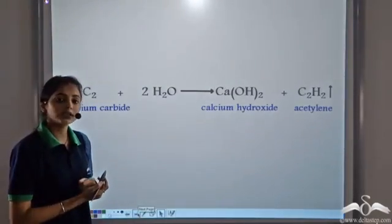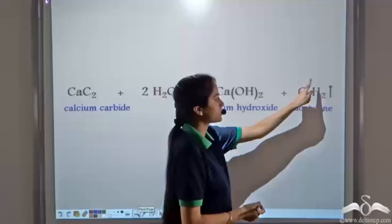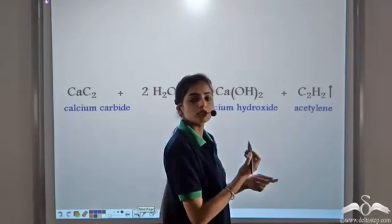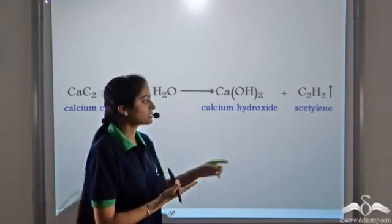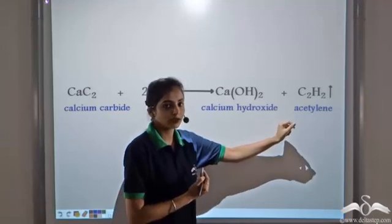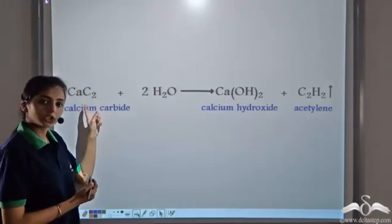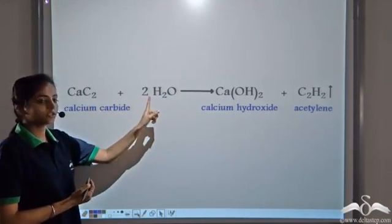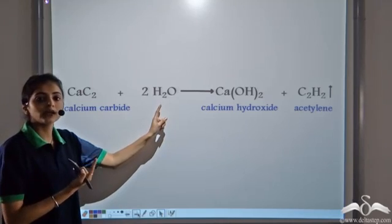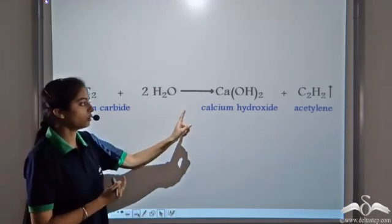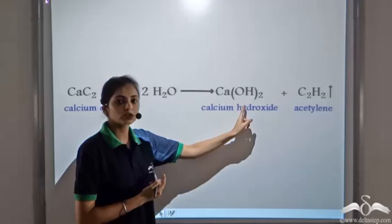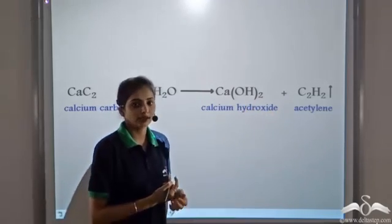The gas released in this reaction is C2H2, which is acetylene, seen through the bubbles rising. Since it is a combustible gas, it catches fire. We use calcium carbide and make it react with water. The white colored solution formed is calcium hydroxide, and the gas released is ethyne or acetylene.